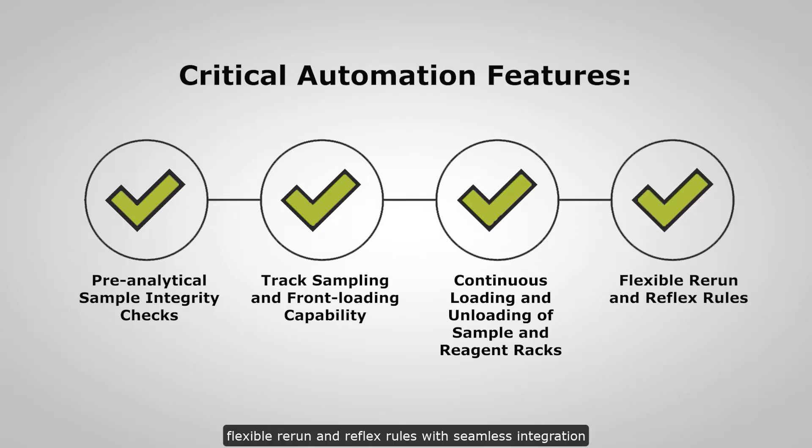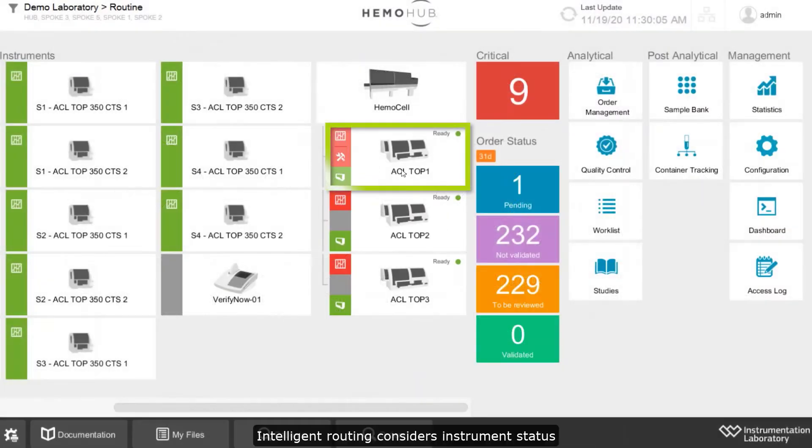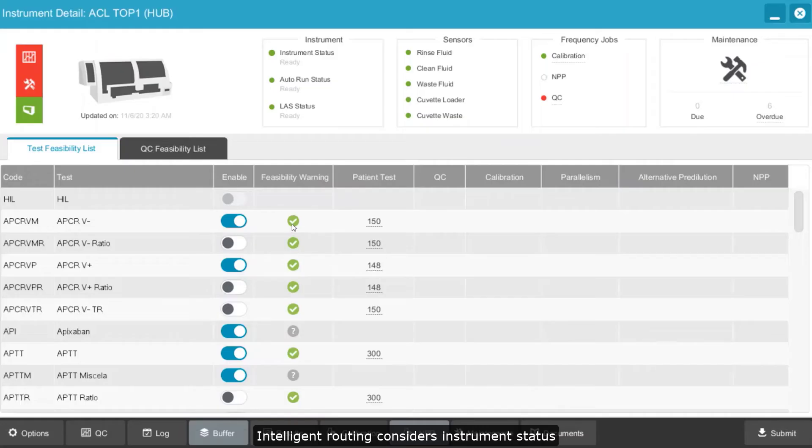Flexible rerun and reflex rules with seamless integration to Hemohub Intelligent Data Manager. Intelligent routing considers instrument status and test feasibility for all connected analyzers, allowing flexibility in daily operation.